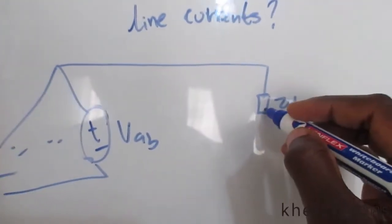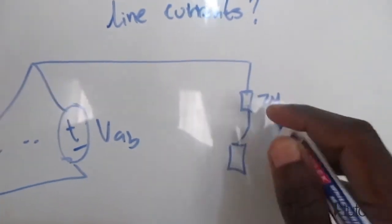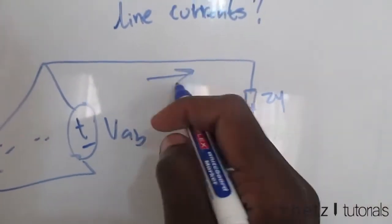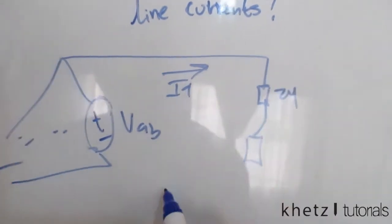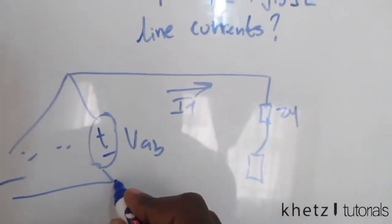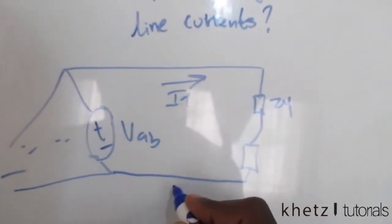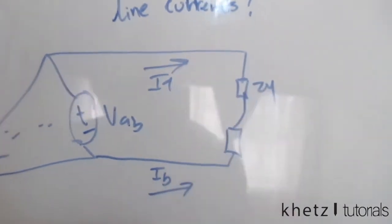We have Zy in that loop. We also have another Zy over there, and we have this current IA going there, and we have IB over there which is going that direction.